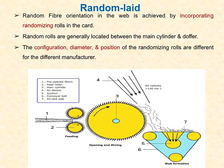The important parts of the air lay system are: pre-opened fibers (the web), feed roller for feeding, main cylinder for opening and mixing, air blower, suction, conveyor belt, and the air lay unit. The fiber is fed through the feed roller, transferred to the main cylinder which performs opening and mixing, and then the air blower disperses the fibers.